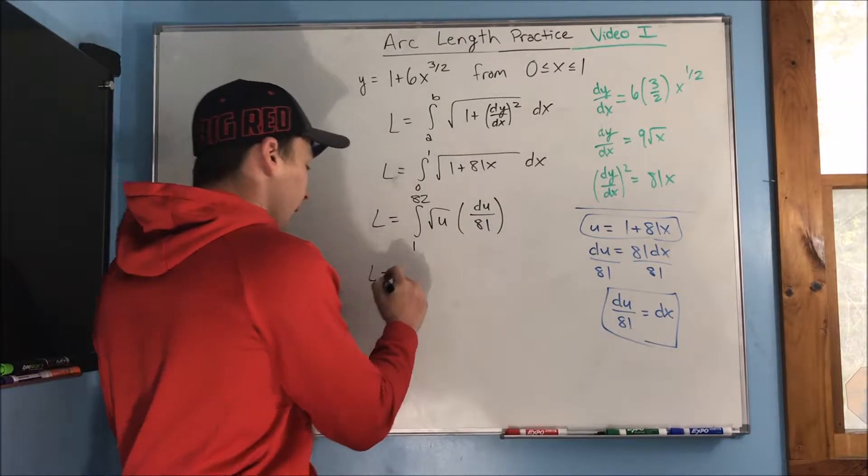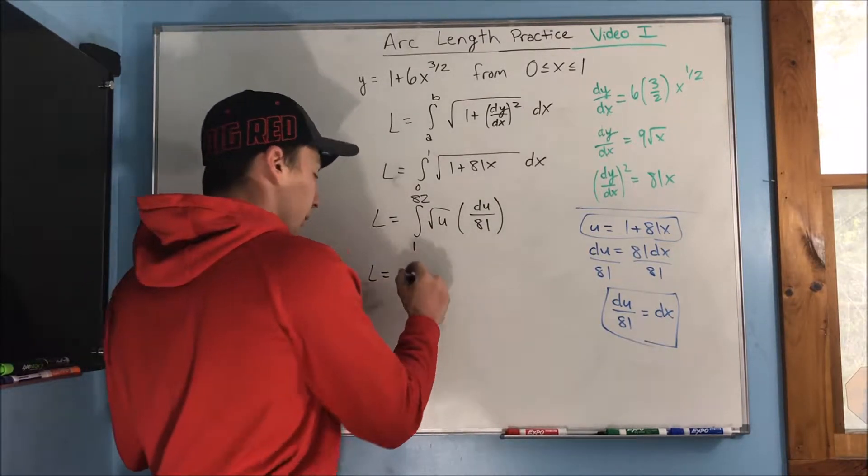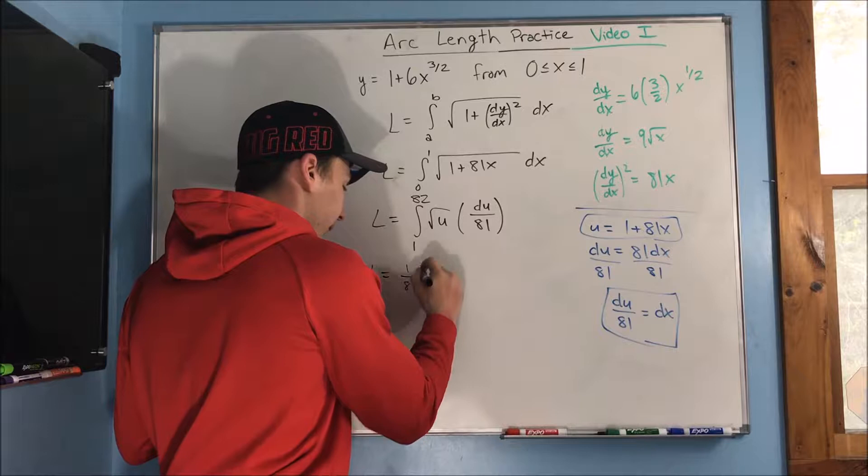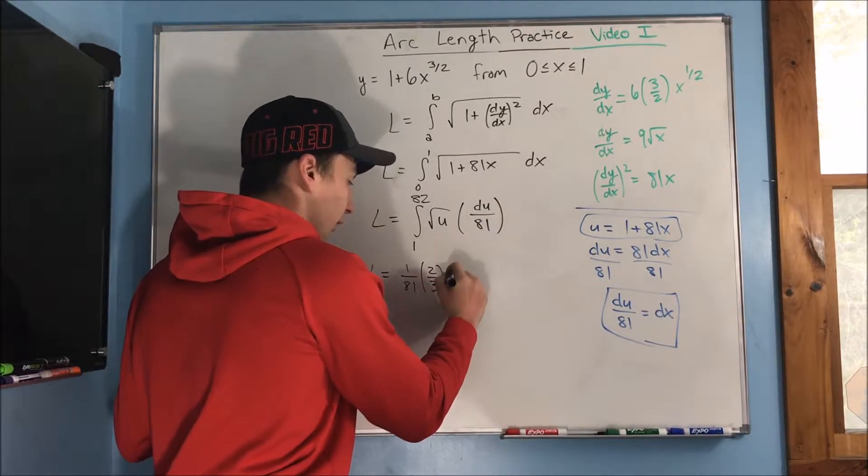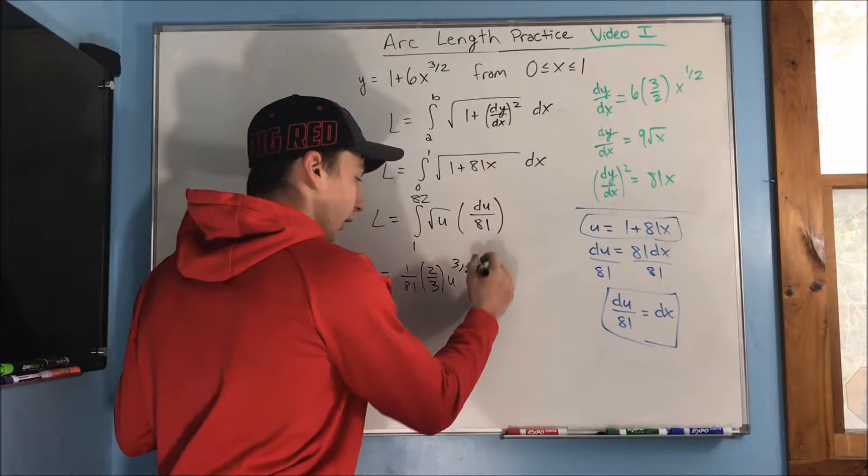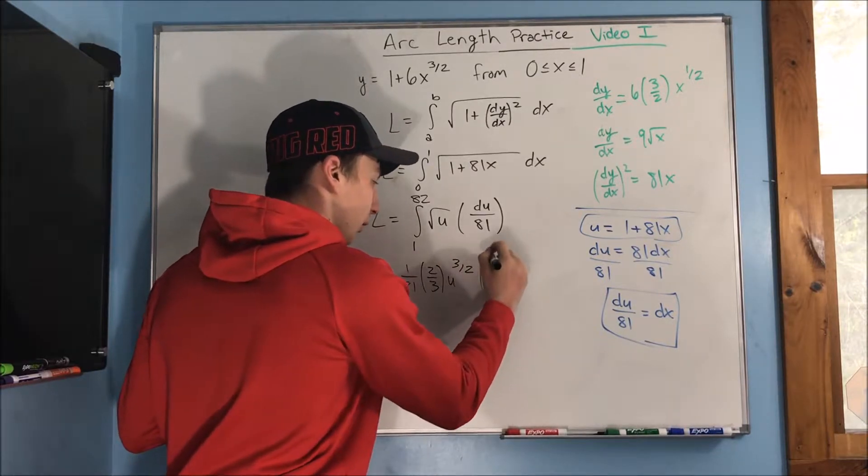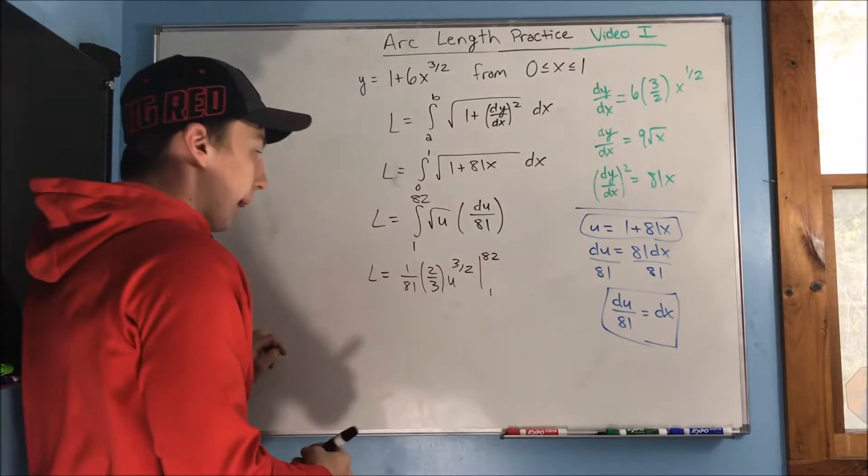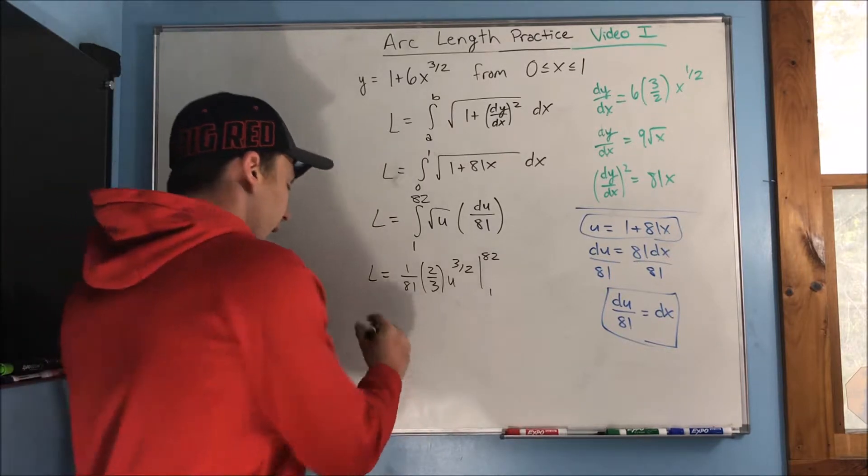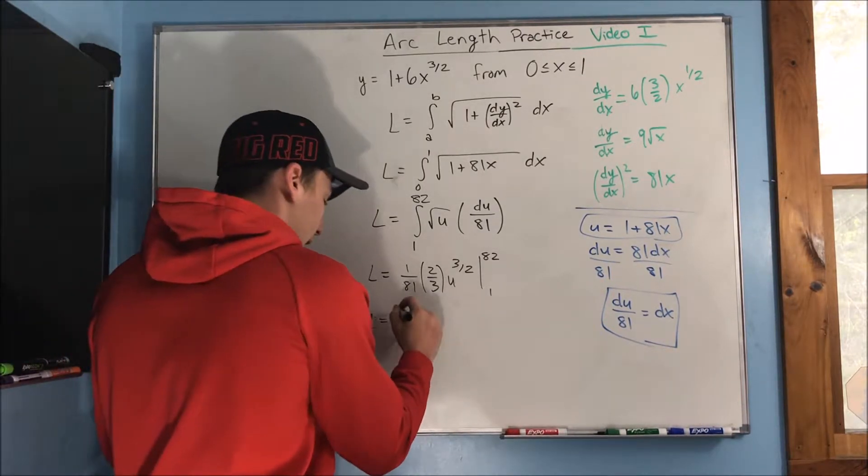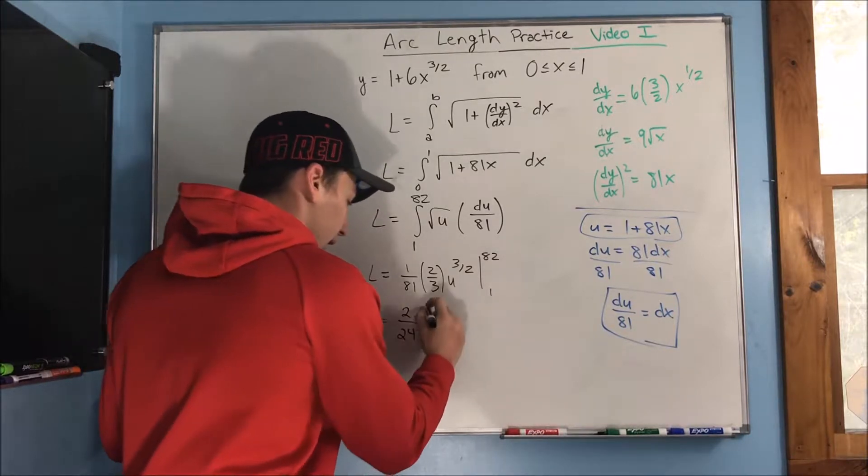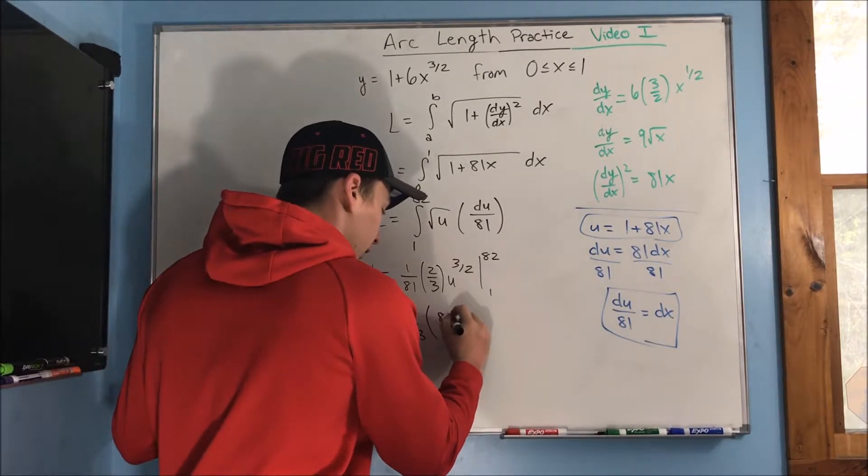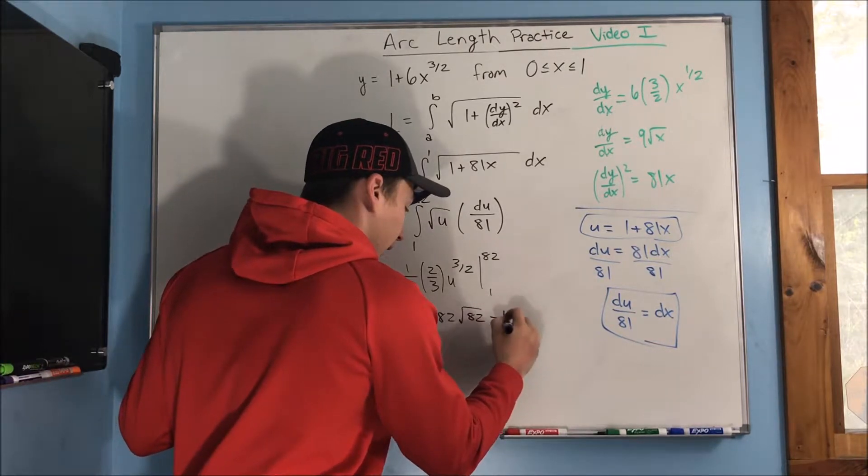So we can do some integration here. We're going to get that the arc length is equal to 1 over 81 times 2 over 3, u to the 3 halves, evaluated from 1 to 82. And then just doing some evaluation, we get 2 over 243 times 82 rad 82 minus 1.